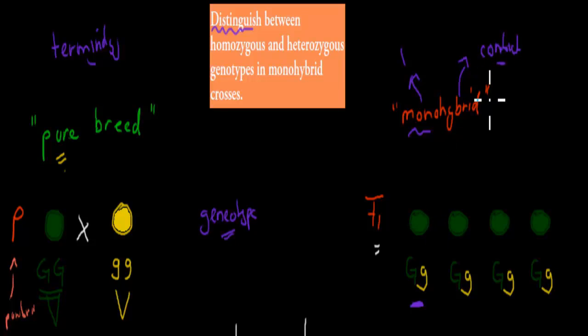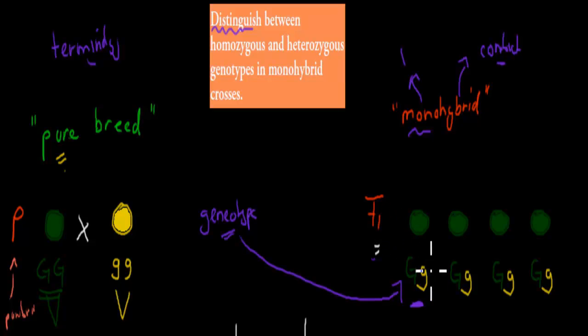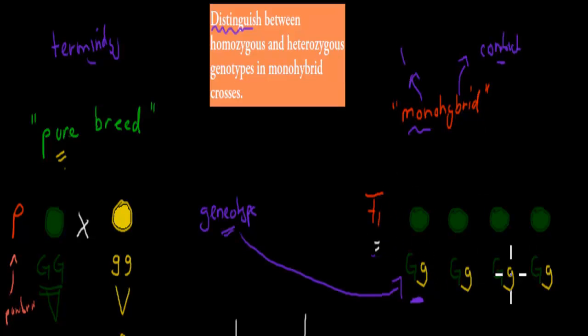We found that the F1 generation had a combination genotype — it was a combination of alleles: one green allele and one yellow allele. So we said these were the monohybrids.